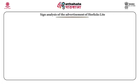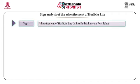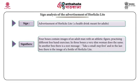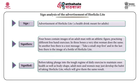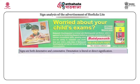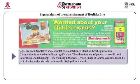Consider a sign analysis of an advertisement for Horlicks Light. The sign is the advertisement of Horlicks Light, a health drink meant for adults. The signifiers include: four boxes containing images of an adult man with an athletic figure practicing different freehand exercises; three boxes showing a very slim woman doing the same; another box with the text 'take a small first step'; and the last box with an image of a bottle of Horlicks Light. What is signified? That before taking the plunge into a tough regime of daily exercise to maintain health and body shape, adult men and women may just develop the habit of taking Horlicks Light, which will give them the same result.